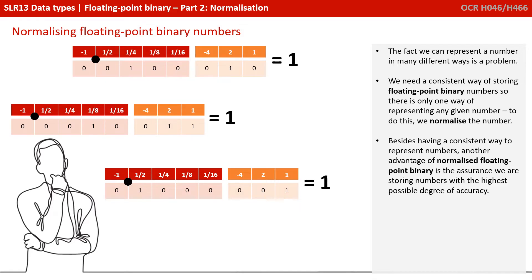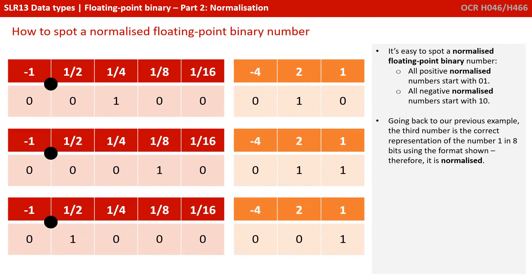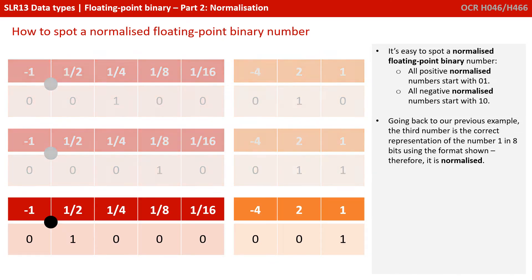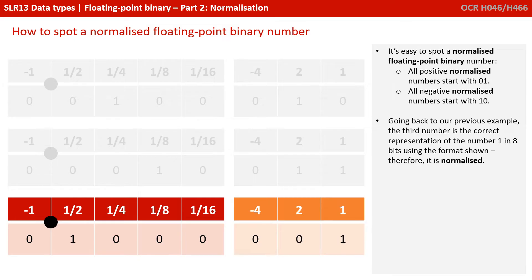To do this, we normalise the number. Besides having a consistent way to represent numbers, another advantage of normalised floating-point binary is ensuring we are storing numbers with the highest possible degree of accuracy in the format we've got. It's really easy to spot a normalised floating-point binary number: all positive normalised numbers start with 0, 1; all negative normalised numbers start with 1, 0. Going back to our previous example, the third number is therefore the correct representation of the number 1 in 8 bits, and is said to be normalised.